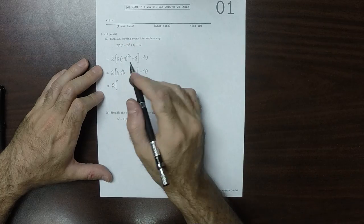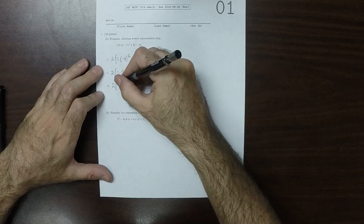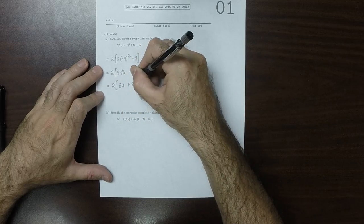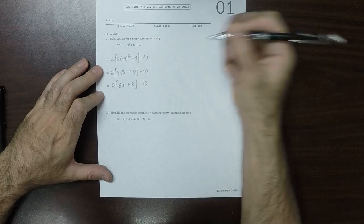So 5 times 16 is 50 plus 30 is 80. So 80 plus 8 minus 10.